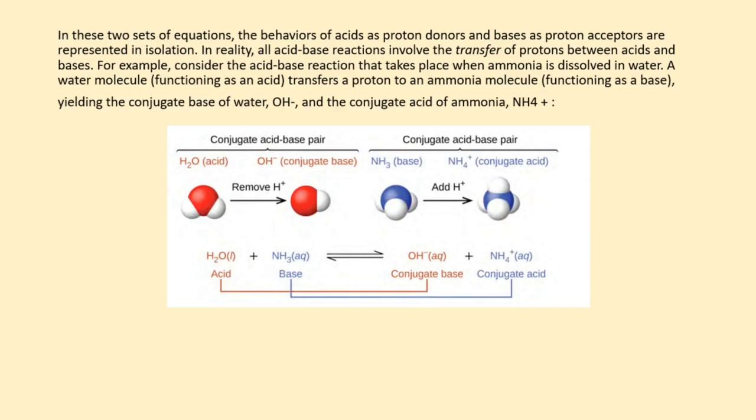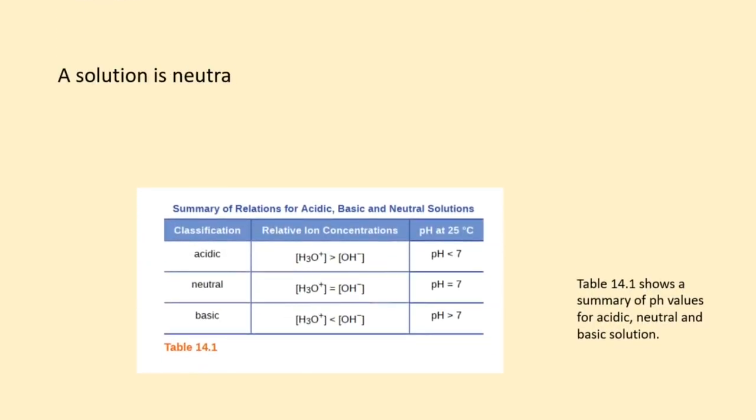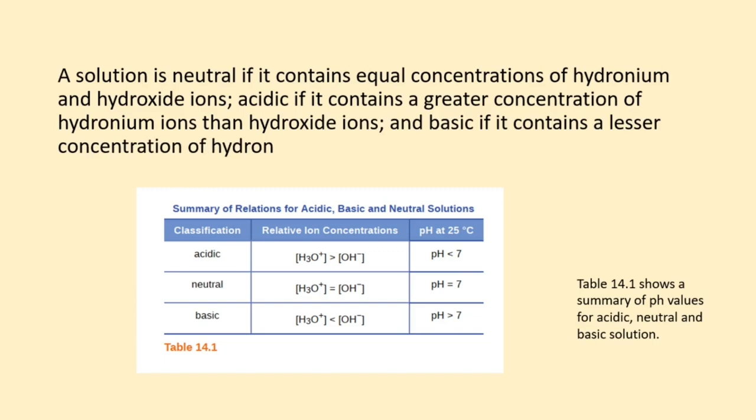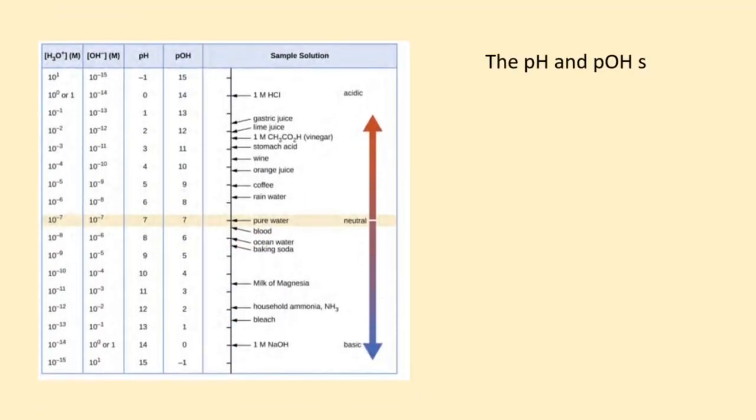A solution is neutral if it contains equal concentrations of hydronium and hydroxide ions, acidic if it contains a greater concentration of hydronium ions than hydroxide ions, and basic if it contains a lesser concentration of hydronium ions than hydroxide ions. The pH and pOH scales represent concentrations of H3O+ and OH- respectively.